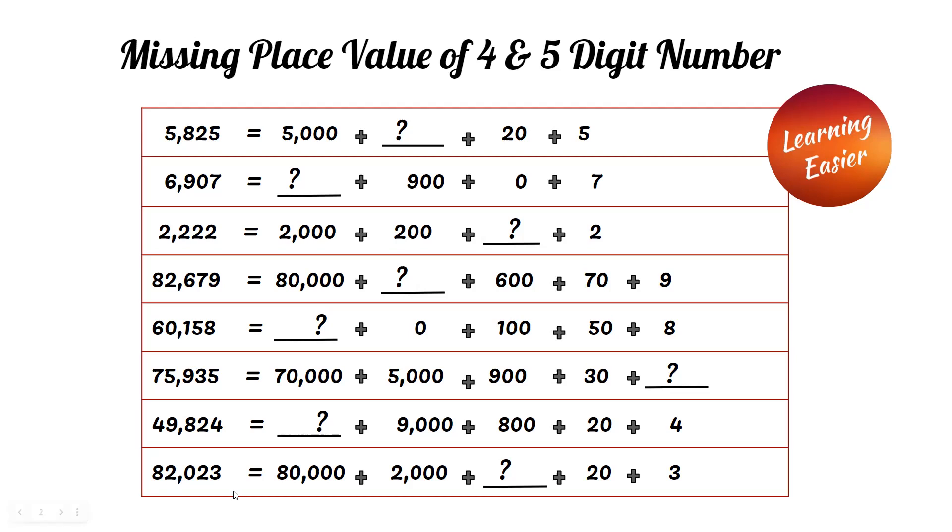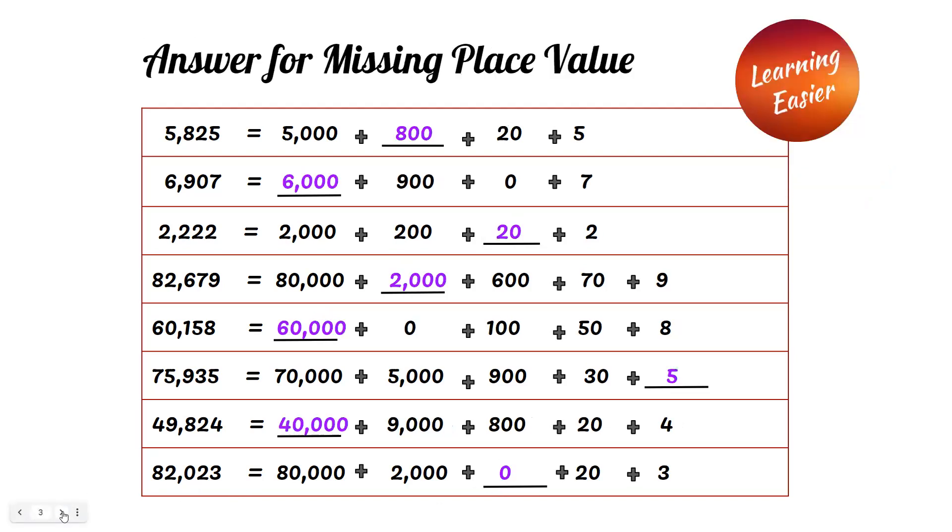82,023. Since we have a zero in the hundreds place, zero is the answer for this problem. Answer for missing place value. Check for answers.